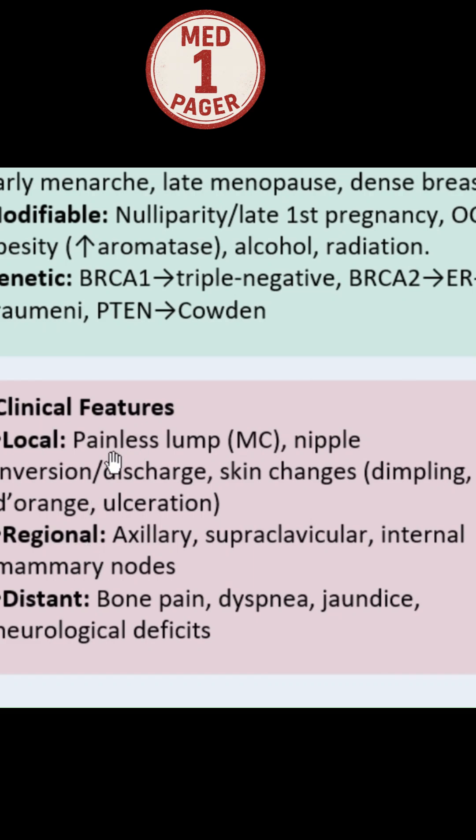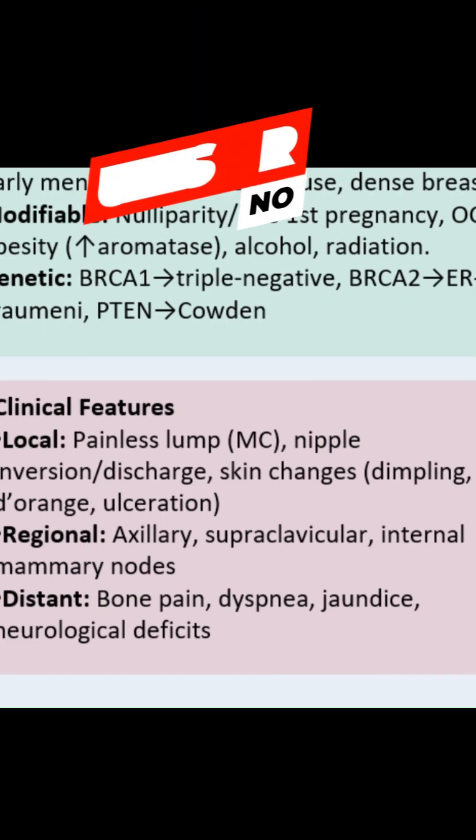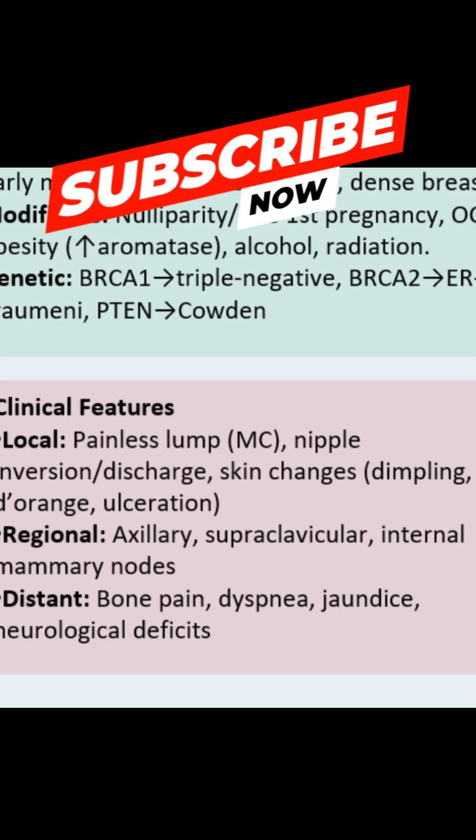Locally we have a painless lump, and this is going to cause asymmetry or these changes. The breasts are not going to be the same size because of that painless lump. We're going to have nipple inversion or a discharge which can be bloody.